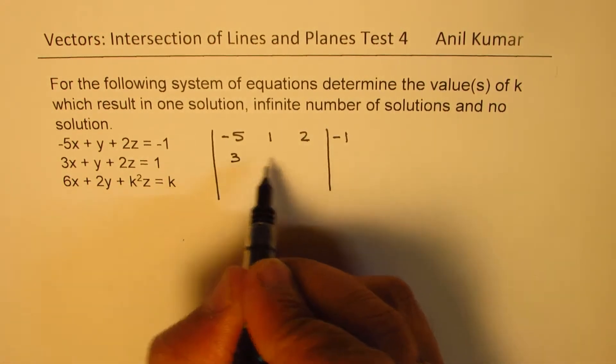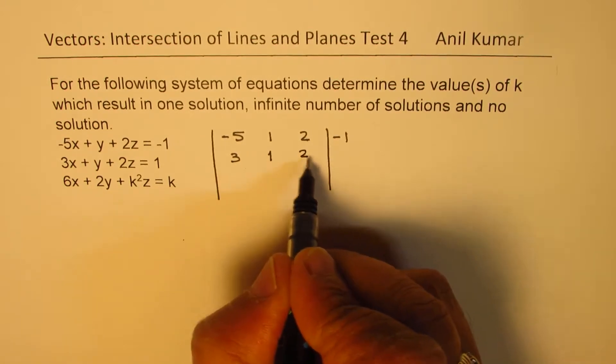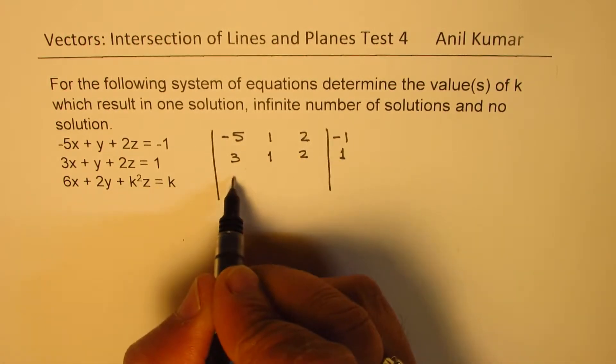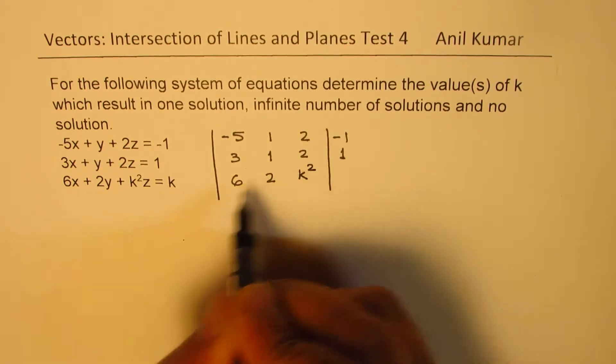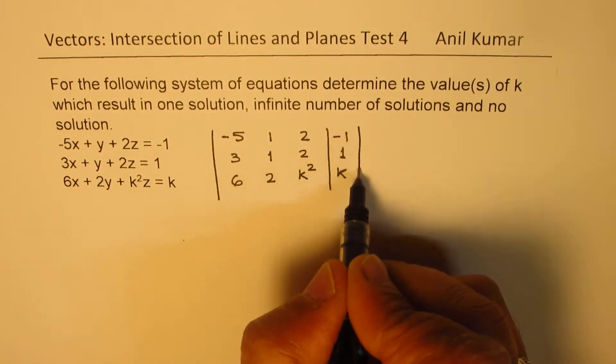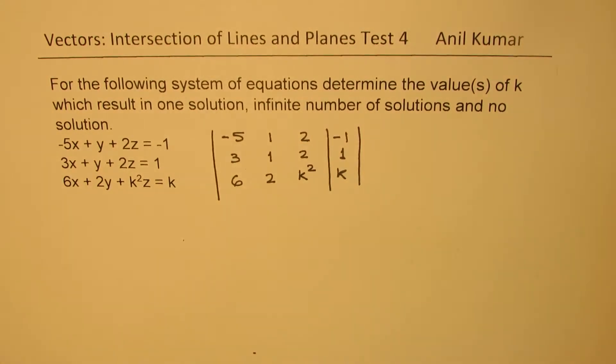Here we have 3, 1, 2, 1, and the last one is 6, 2, k squared is the coefficient of z, and here we have the term k.